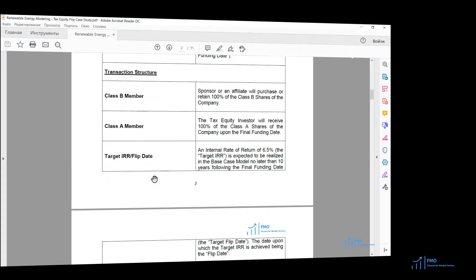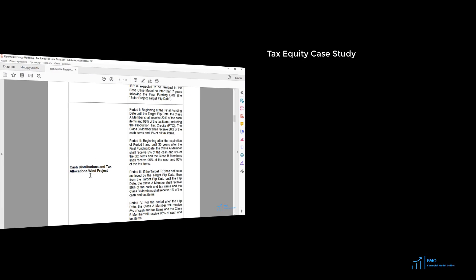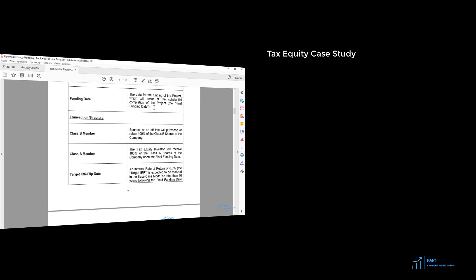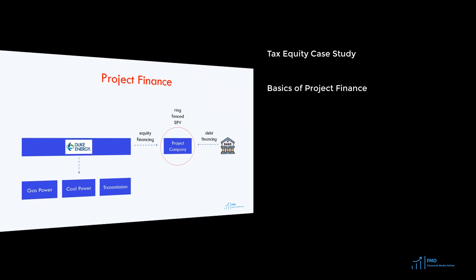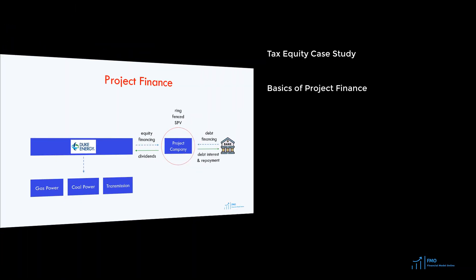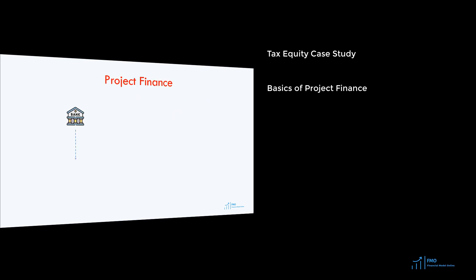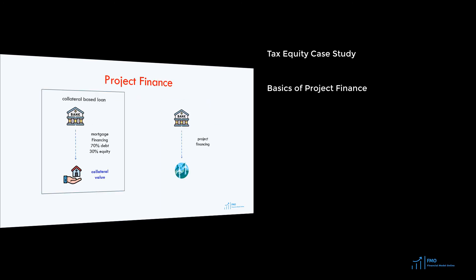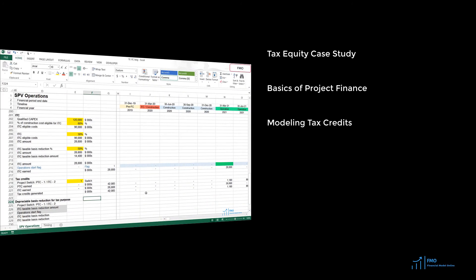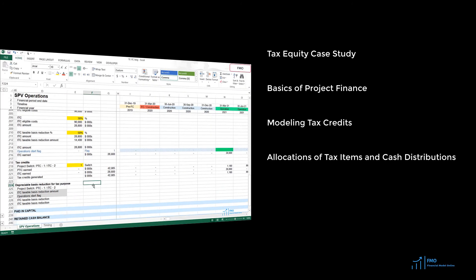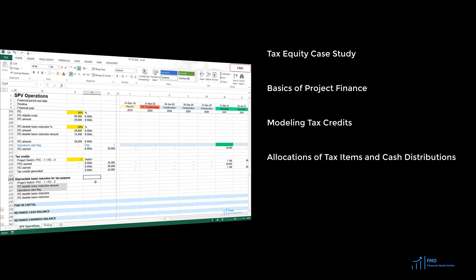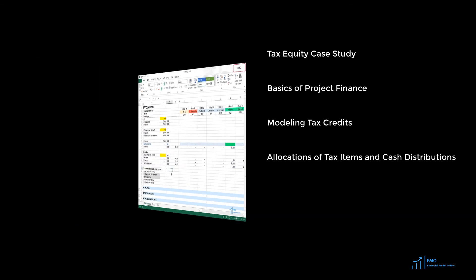First, we will review the case study to understand the inputs to the financial model. Next, we will review the basics of project financing that many of you will already be familiar with from our other courses on Project Finance Modeling for Renewable Energy. We will then model the tax credits, allocation of the tax losses and tax credits, and cash distributions between partners.